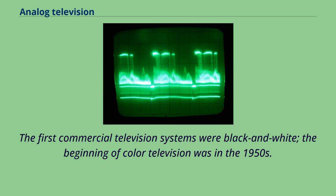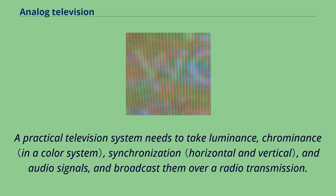A practical television system needs to take luminance, chrominance, synchronization, and audio signals, and broadcast them over a radio transmission. The transmission system must include a means of television channel selection.